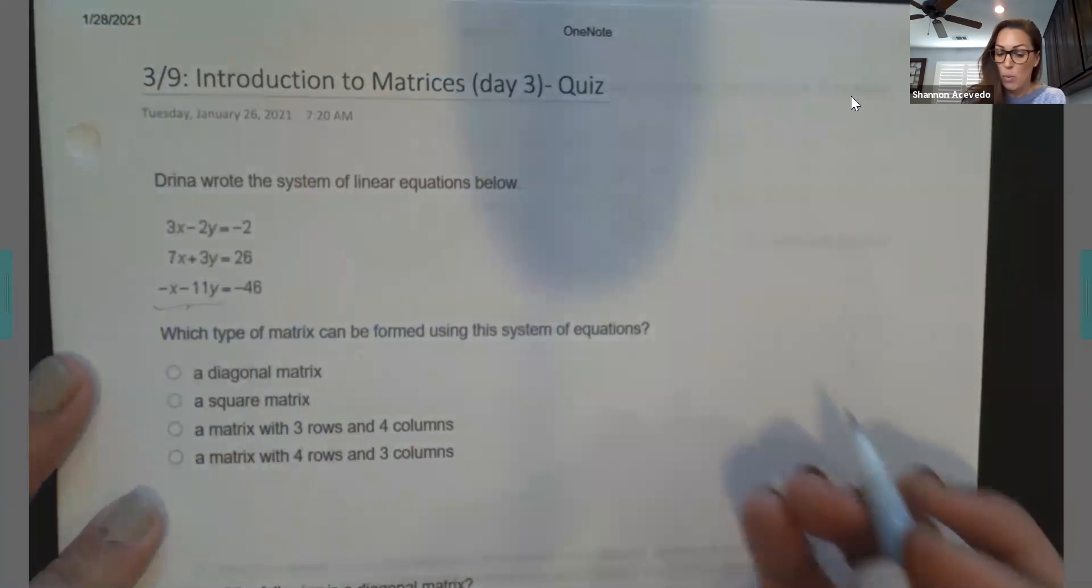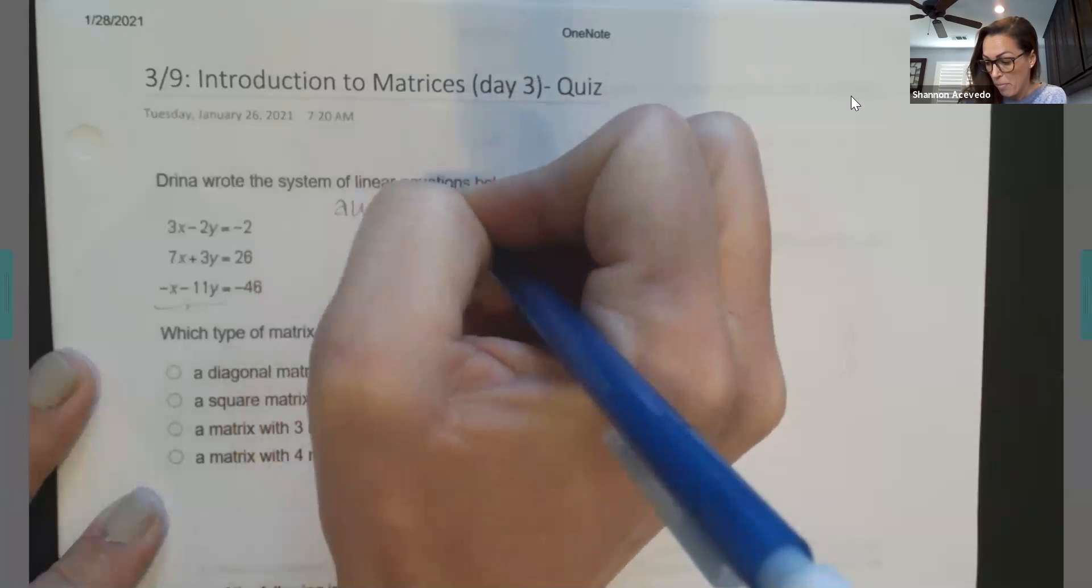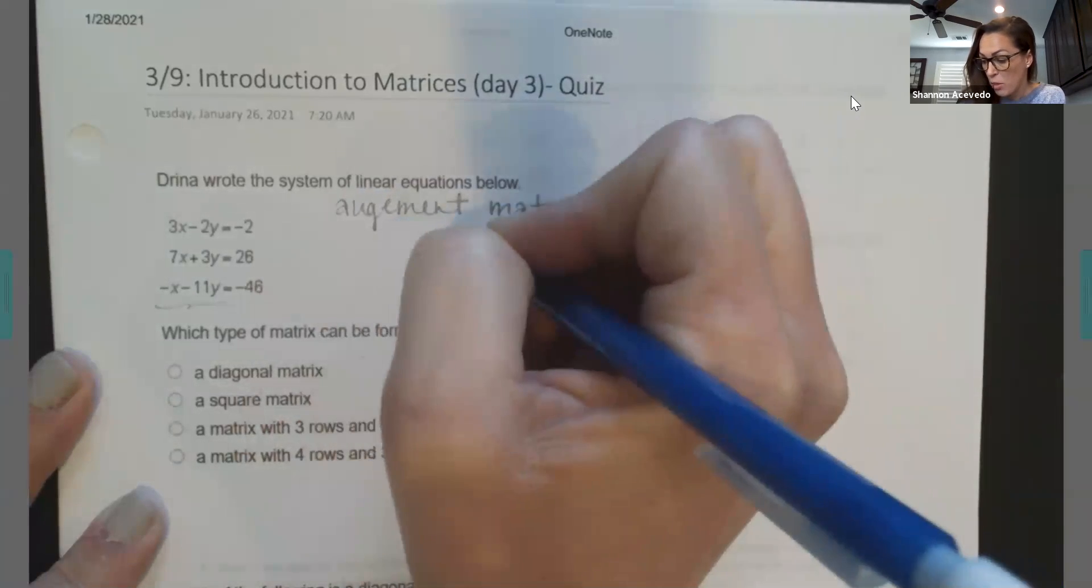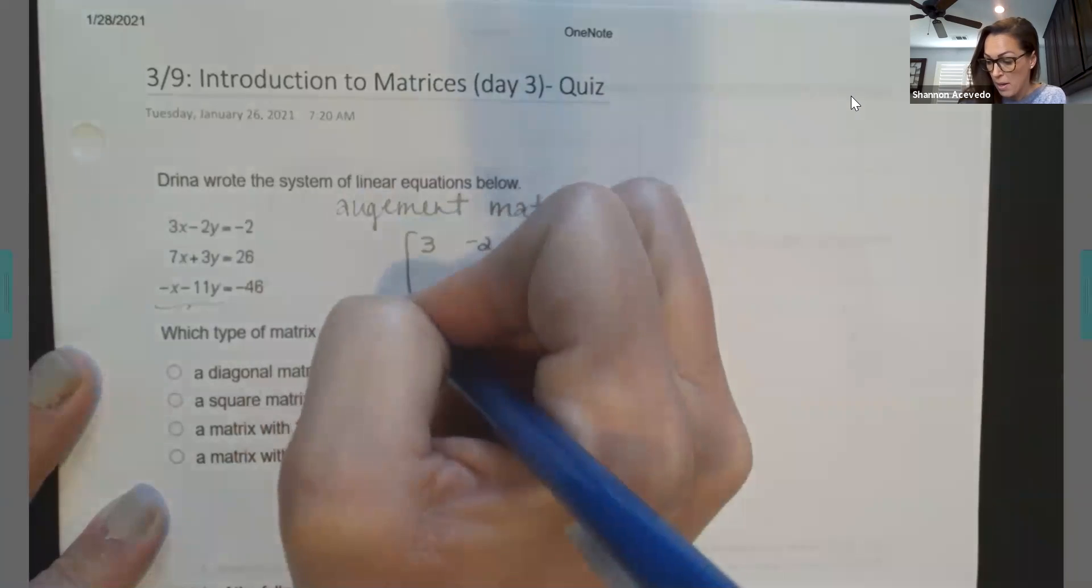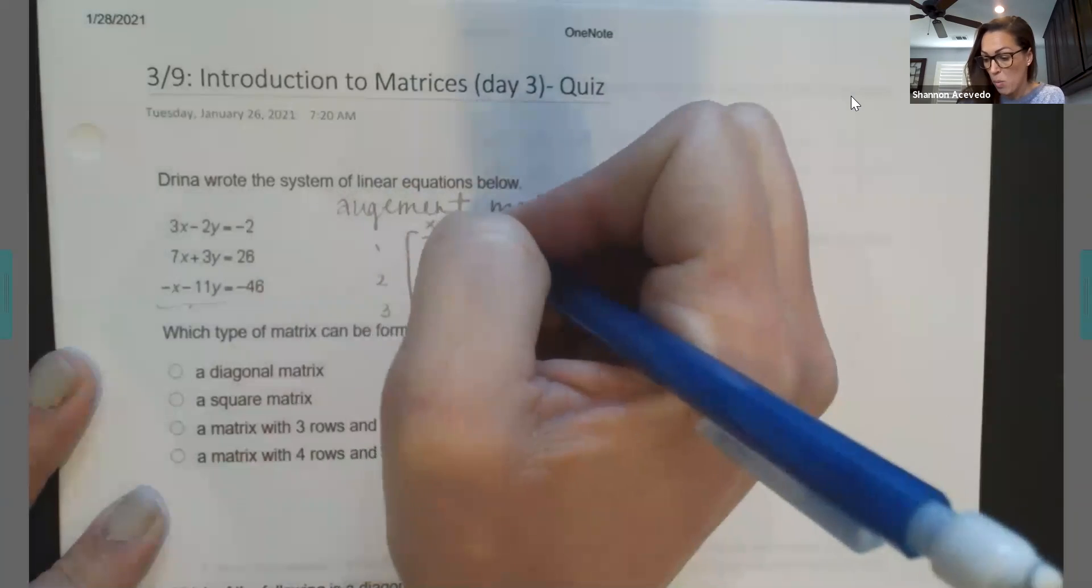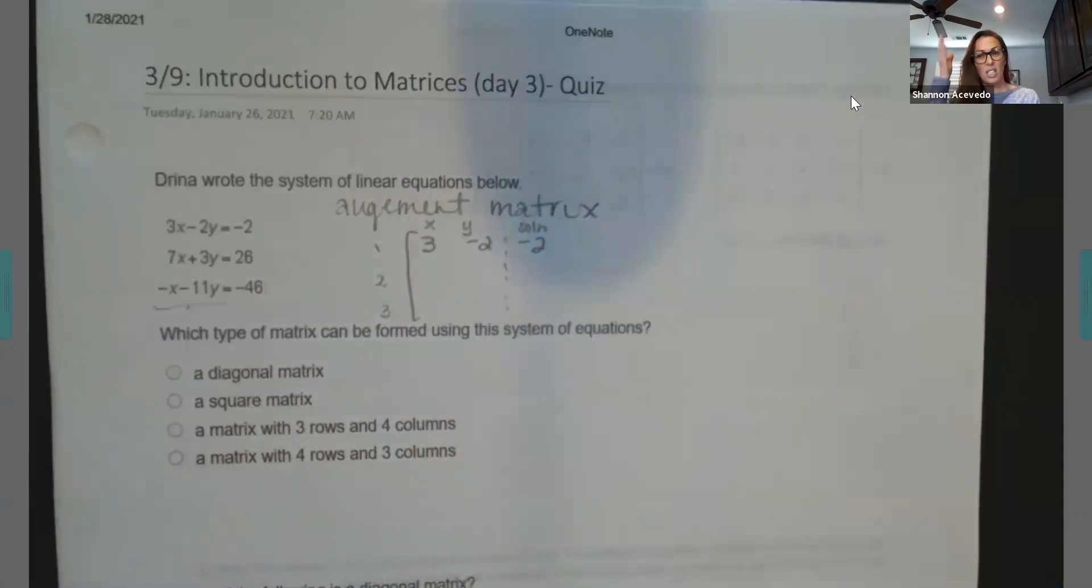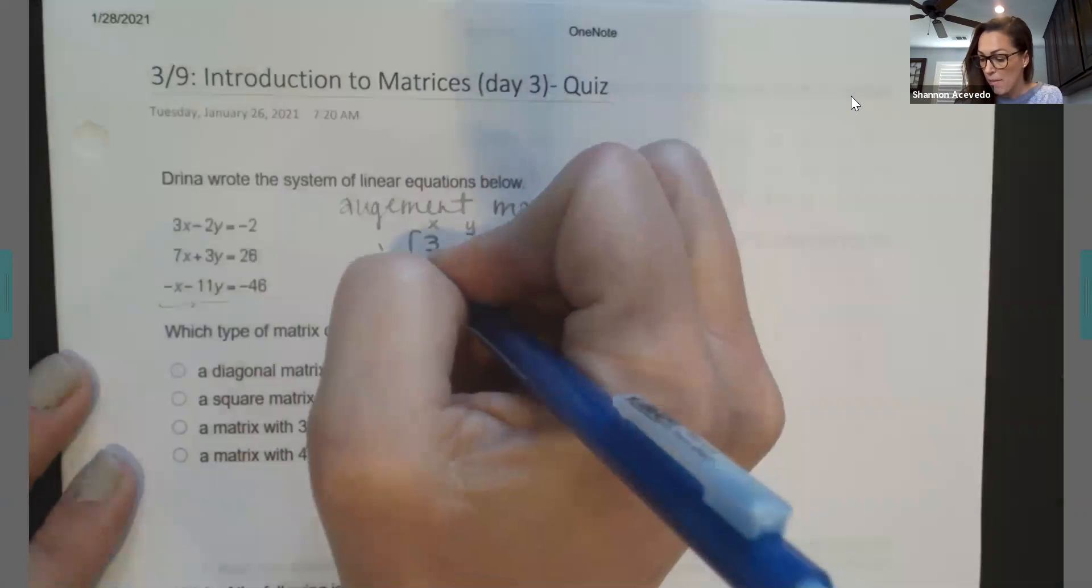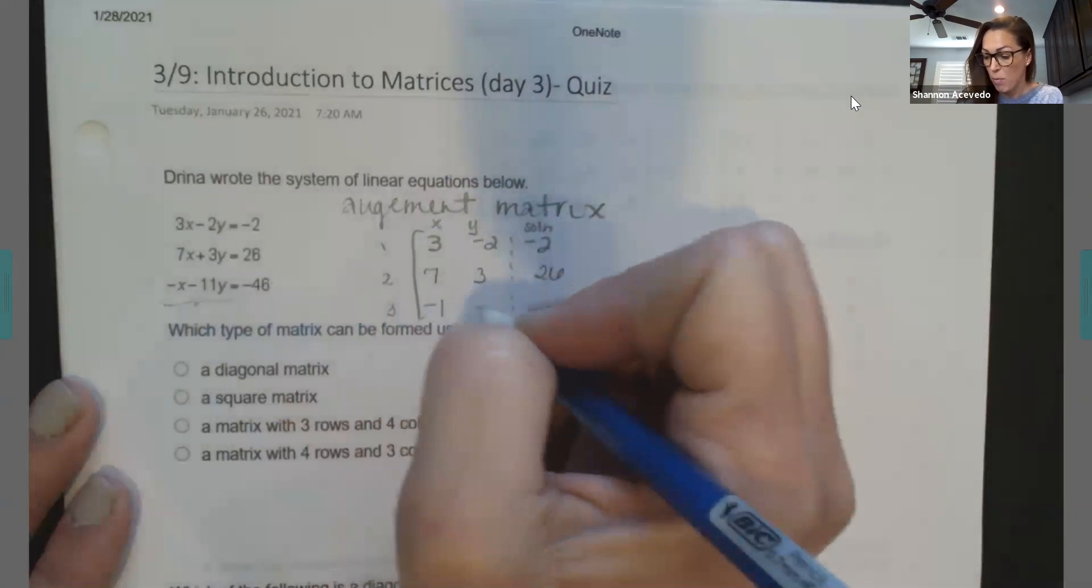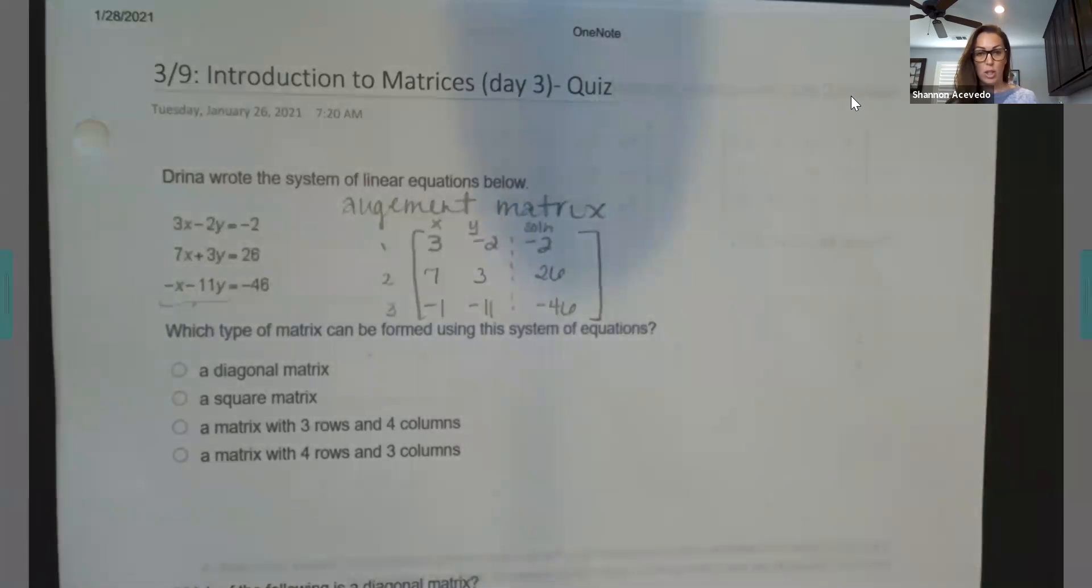So if I want to do the augmented matrix, then it would look something like this. It'd be three, negative two, negative two, where these are my equation one, two, three. This is my x, my y, and my solution. And a lot of times when we do that solution, we do this little dotted line to kind of show it's separated there. So then I would have seven, three, and 26 for the second equation. And I would have negative one, negative 11, and negative 46.